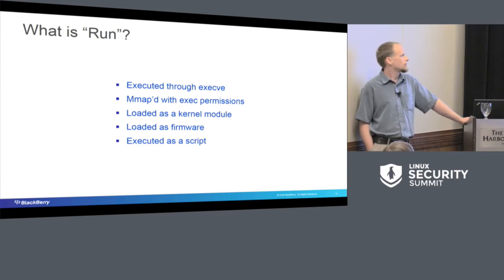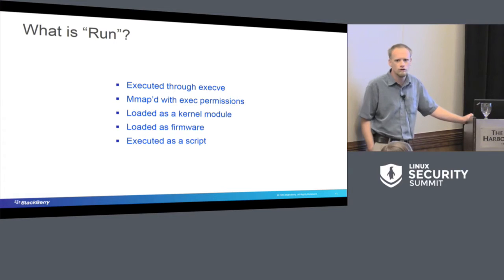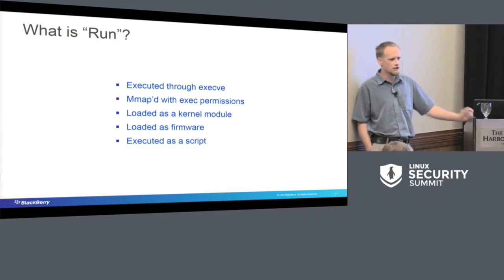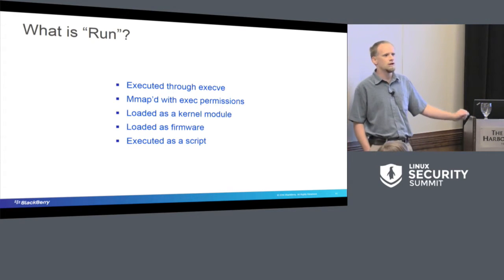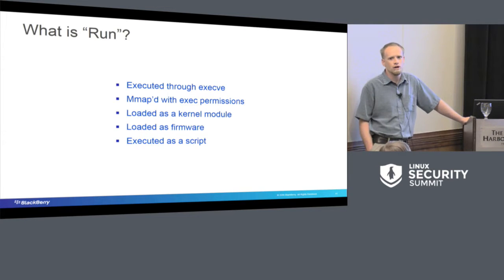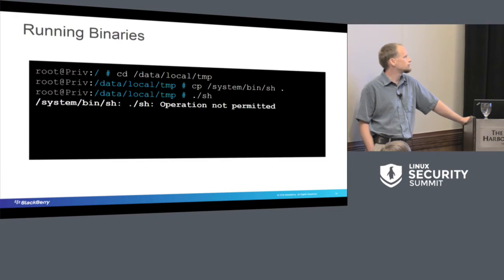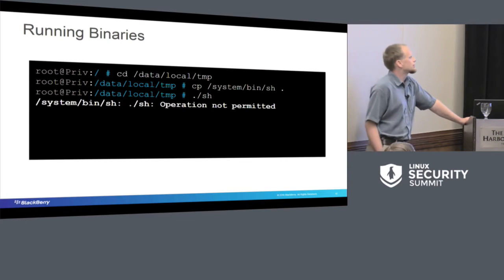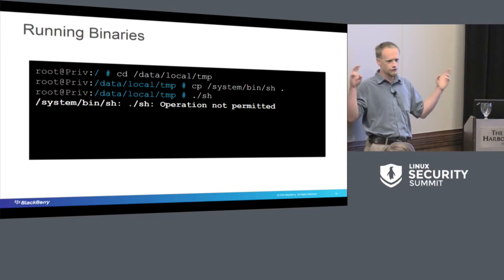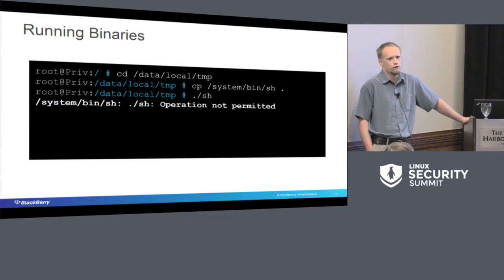If we have an app trying to run under the init context that is also coming from the user data partition, there's something really weird going on. What is run? Run is executing something through exec VE, M mapping with execute permissions for a file-backed portion of memory, loading kernel modules. There was another LSM which was load pin that actually pins them to the particular partition where the first kernel module was loaded from. Loading as firmware and executing as a script as well.